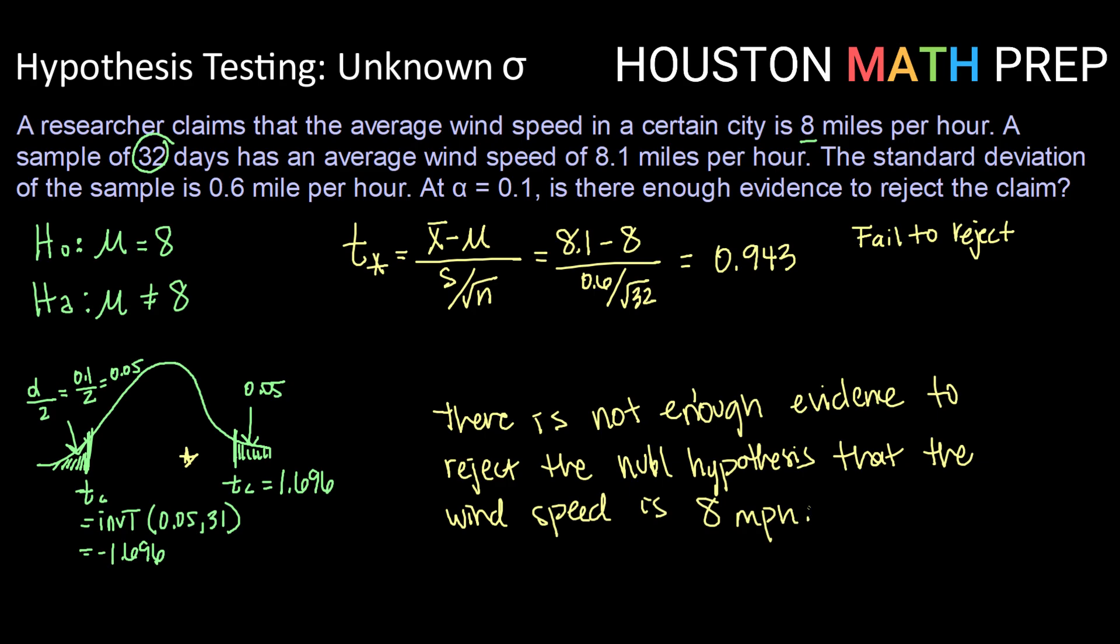So just because we had a slightly windier sample, a slightly windier 8.1 miles per hour sample, that does not give enough evidence to reject the claim that the average wind speed is 8 miles per hour.